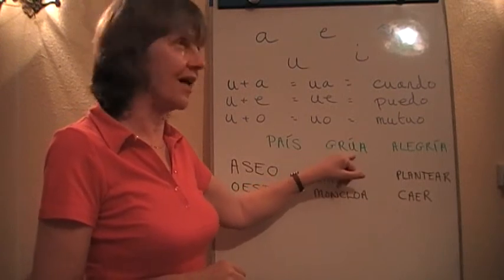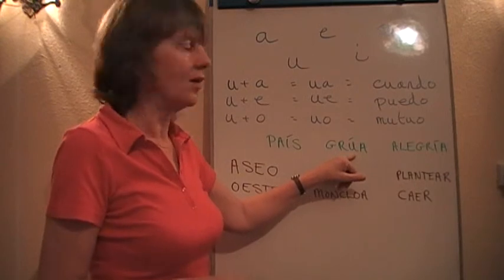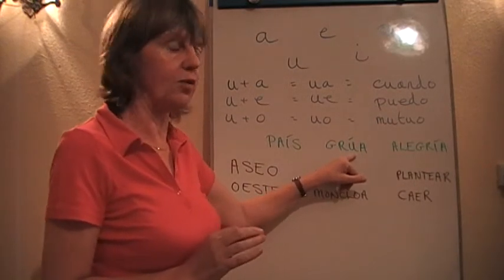If the accent wasn't there, it would be grua, grua, or something. Grua, grua. But we've got the accent on the u, making it grúa, making it a two syllable word.